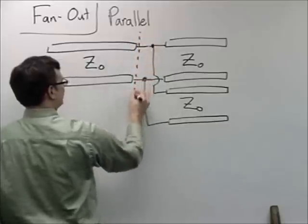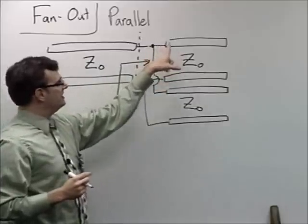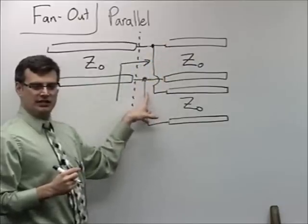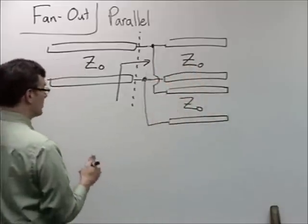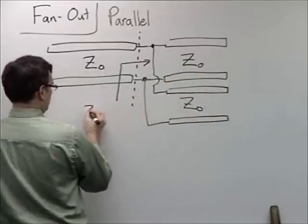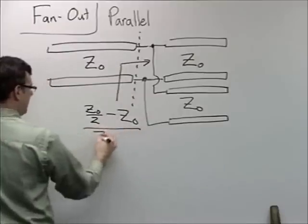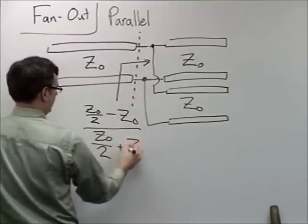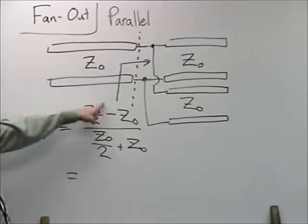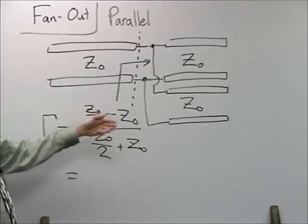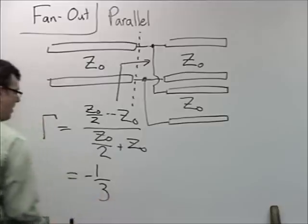The end of the input transmission line sees the Z₀ of the second line in parallel with the Z₀ of the third line, which gives Z₀/2. Using the standard reflection coefficient formula: (Z₀/2 - Z₀)/(Z₀/2 + Z₀) gives negative 1/3. So even though the individual lines are matched, connecting them in a parallel fan-out intrinsically creates a mismatch.